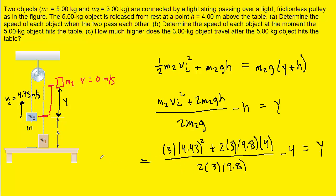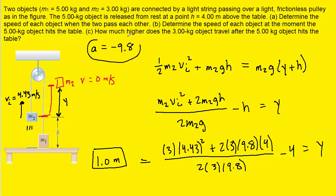Notice that part C could also have been solved using kinematics, where we have the initial velocity of 4.43 meters per second, a final velocity of zero, and since m2 is essentially in free fall with no other forces acting on it, an acceleration of negative 9.8 meters per second squared. You could use those values in a kinematics formula to solve for the displacement delta y, and you should also get 1 meter.